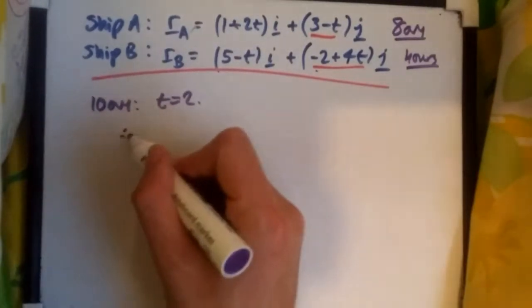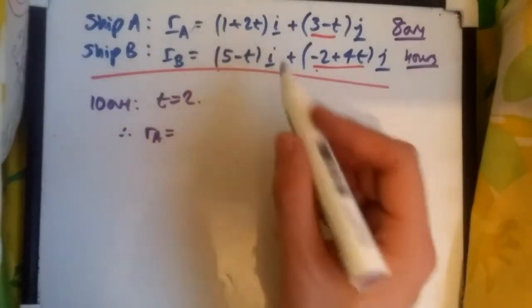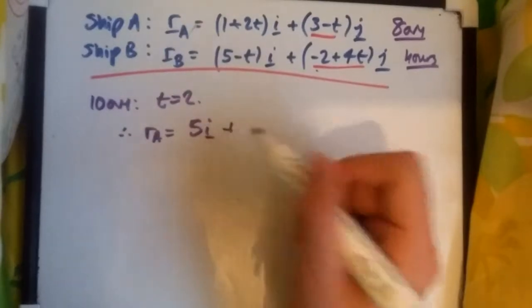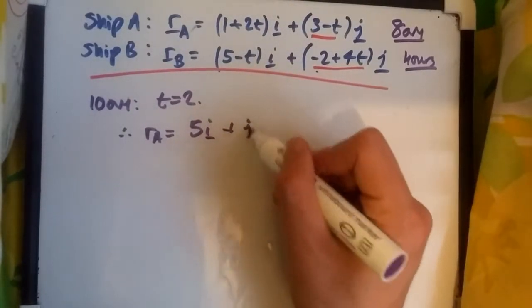So when t is 2, we have at A the position vector of 1 plus 2 times 2 is 5i plus 3 minus 2 is 1, we can just say 1j or j.